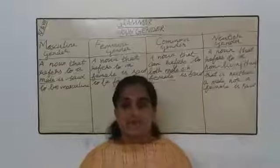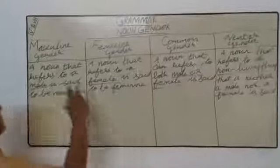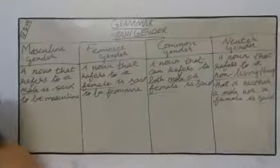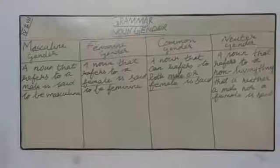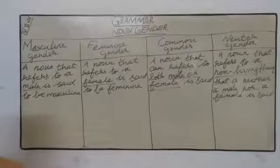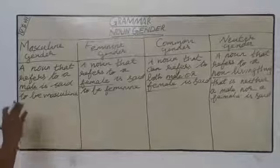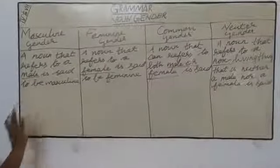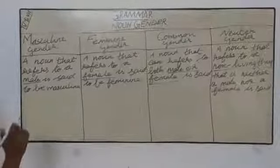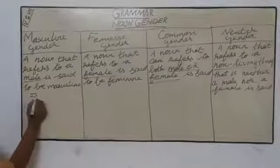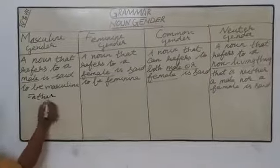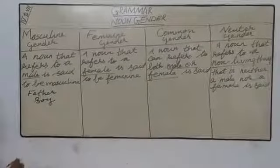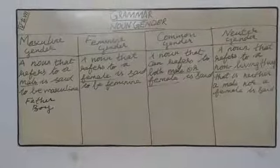What is masculine gender noun? A noun that refers to a male is said to be a masculine gender noun. Some examples are: father, boy, and uncle.